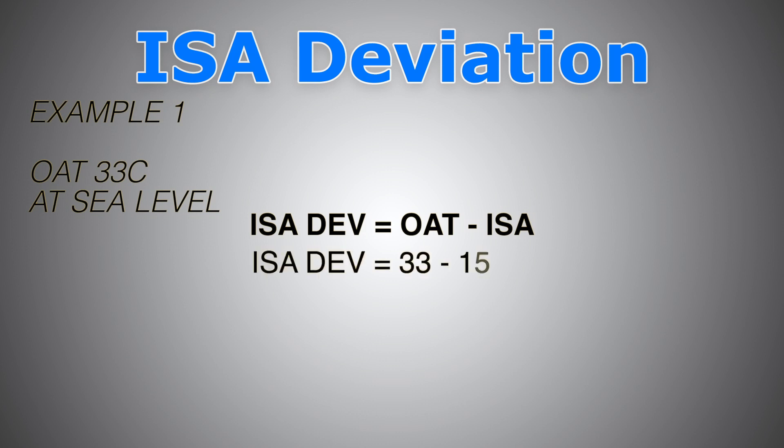So ISA deviation equals 33, which happens to be the outside air temperature or the actual air temperature, minus 15. How do we get this 15? This 15, like we said, it is the ISA temperature at sea level. So the given is sea level. That means ISA temperature at that level is 15. So 33 minus 15, we get 18. This means that the actual temperature is hotter than the standard temperature by 18 degrees. So ISA deviation is plus 18.